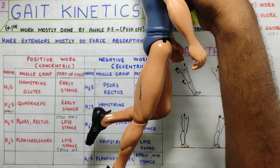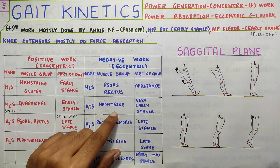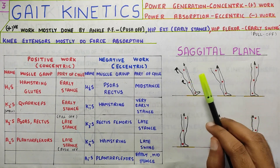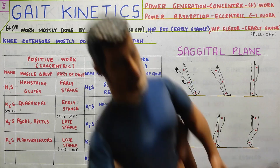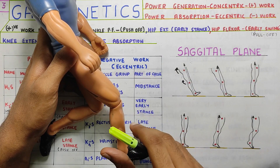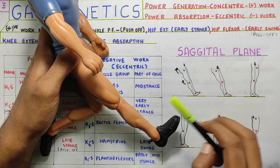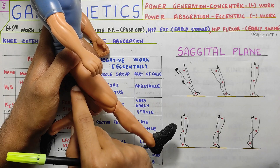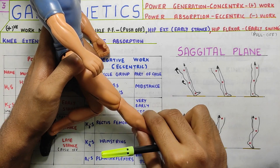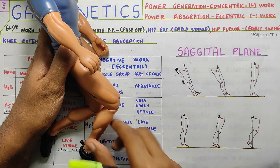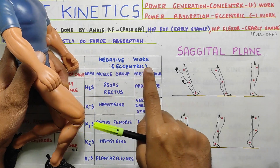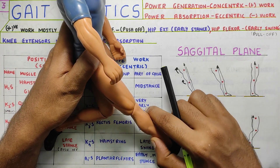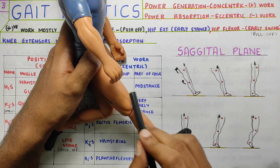At the knee joint, K1S involves the hamstrings during very early stance. The line of gravity is ahead at the knee joint, so the knee will go toward extension. This extension is controlled by the hamstrings eccentrically — because hamstrings cause flexion concentrically but here they do eccentric negative work as K1S. So the hamstrings control the extension, which is the second event seen.